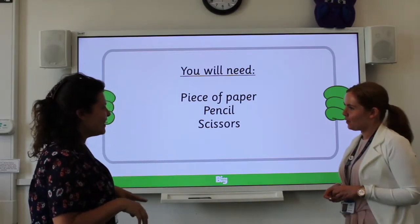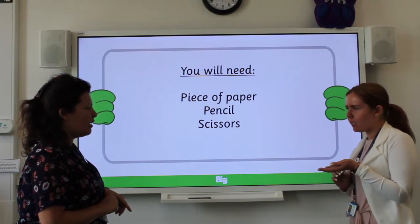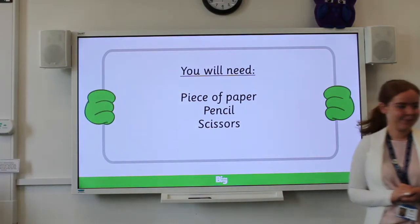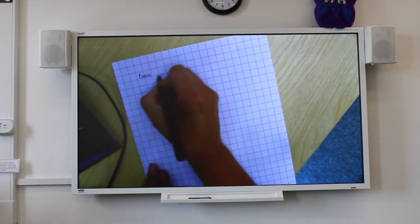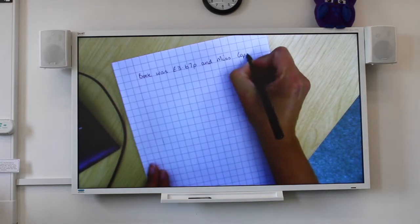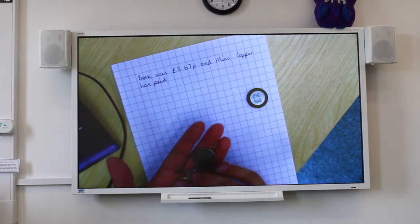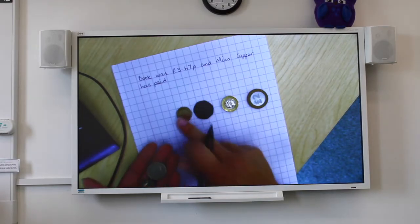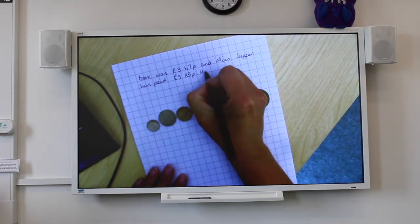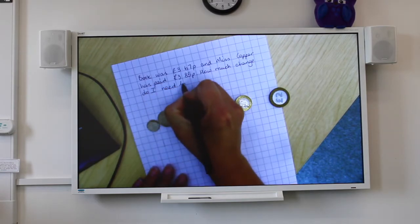Oh, hello Mrs. Keane. Oh, hi Miss Copper. Thank you for getting me that book. How much money do I need to give you for it? Oh, it was £3.67. Have you got the money there? I haven't got the exact amount. I have £3.85. £3.85. Oh, I do have some change. Maybe you can help me work it out. I haven't got the exact amount. She's going to pay £3.85. How much change do I need to give her?